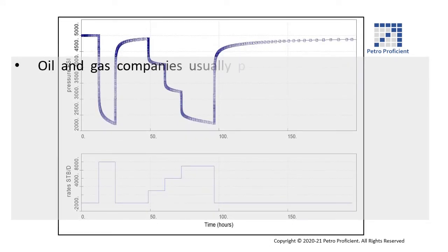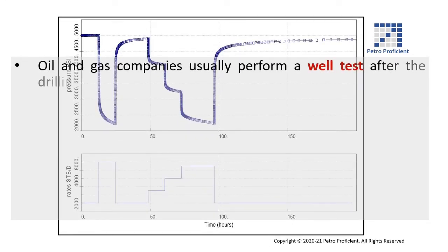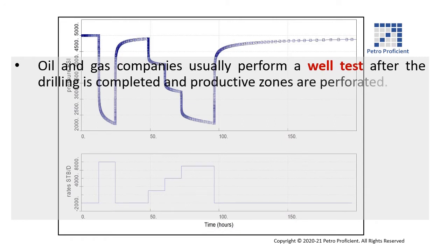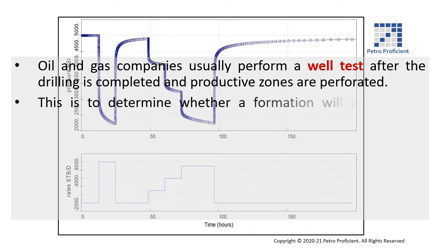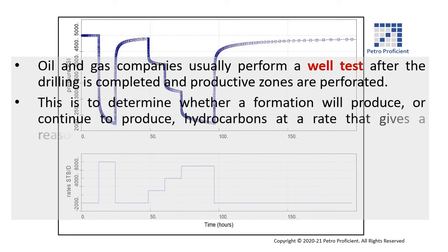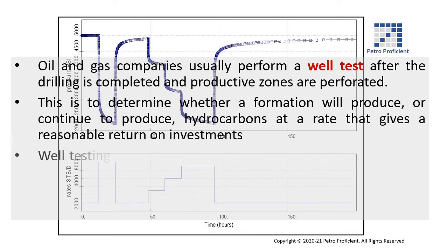Oil and gas companies usually perform a well test after the drilling is completed and productive zones are perforated. This is to determine whether a formation will produce, or continue to produce, hydrocarbons at a rate that gives a reasonable return on investments. Well testing provides information about the characteristics and extent of the reservoir.